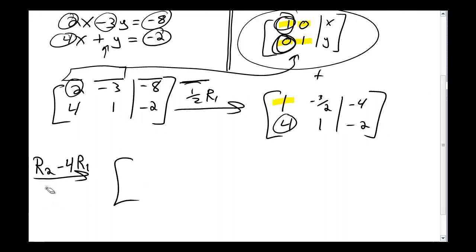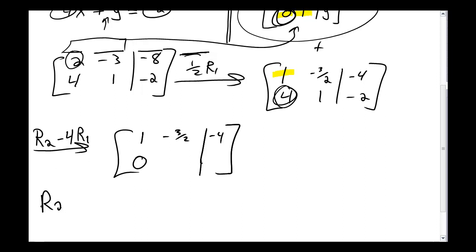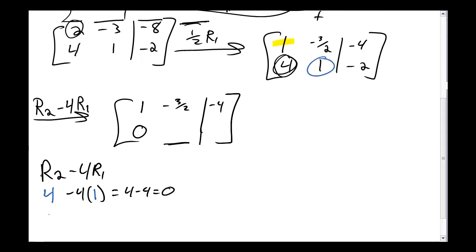Remember, this is one of the three row operations I can do. In particular, it's the third one, which I said is the most common, messing with rows by adding multiples of other rows to them. Because row 2 is the one that's changing, row 1 isn't going to change at all, so it's going to stay 1 minus 3 halves and negative 4. That's not going to change at all. But the bottom row is going to change. If I take 4 from the bottom row and then subtract 4 times the top row, I'm going to get 0. Let me make this into a bit of an equation over here. Row 2 minus 4 row 1. What's really happening is I'm saying, well, for row 2, I'm taking 4. And for row 1, I'm taking 1.